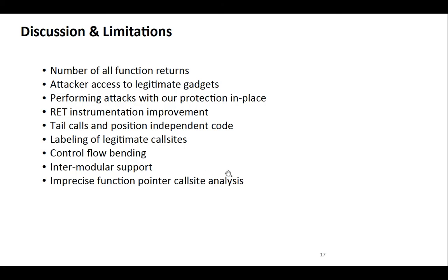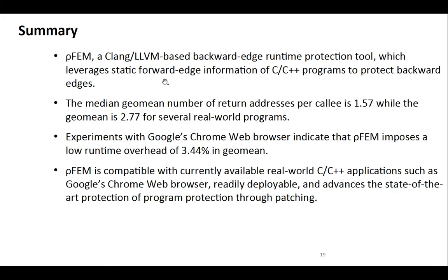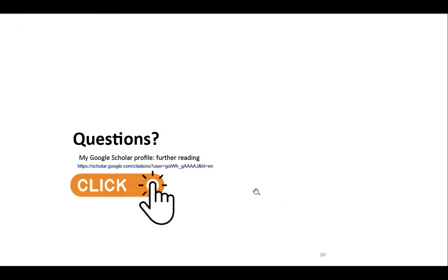In summary, our tool is a backward edge protection tool which leverages a state-of-the-art approach to mitigate ROP attacks for C and C++ programs. It has very low geomean numbers of return call sites per callee — 1.557 and 2.77. We showed that with the Chrome browser we have a runtime overhead of around three percent, which is very low. Our tool is compatible with currently available real-world C++ applications, readily deployable, and advances the state of the art of program protection through patching. Thank you very much.